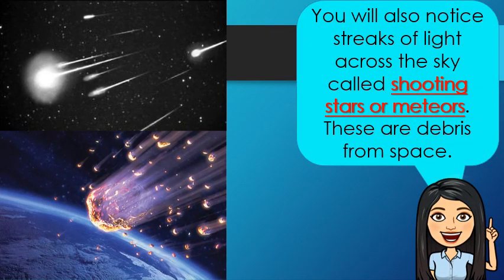You will notice streaks of light across the sky called shooting stars or meteors. These are debris from space. When they enter Earth's atmosphere at high speeds, they burn producing bright streaks of light.